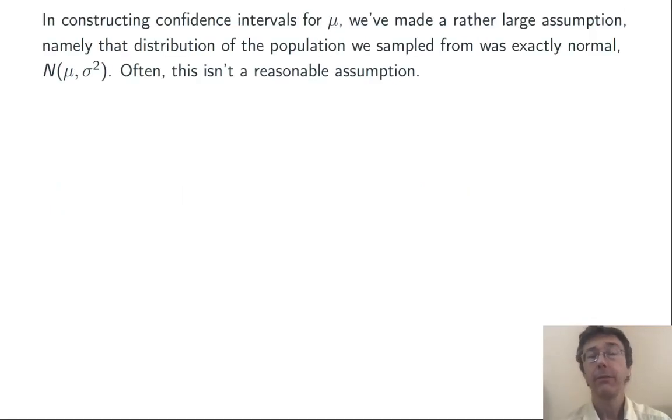Our formula for the confidence interval for the population mean, mu, has a pretty large assumption built in, namely that the population that you're sampling from has an exactly normal distribution, say with mean mu and variance sigma squared.